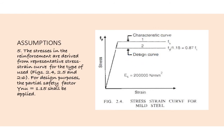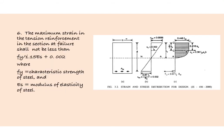Next: The maximum strain in the tension reinforcement in the section at failure shall not be less than fy divided by 1.15Es plus 0.002, where fy is the characteristic strength of steel and Es is the modulus of elasticity of steel.